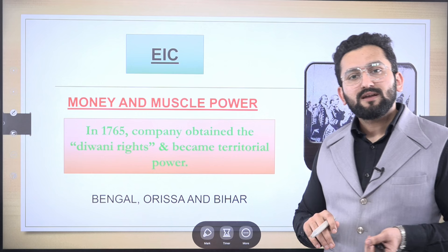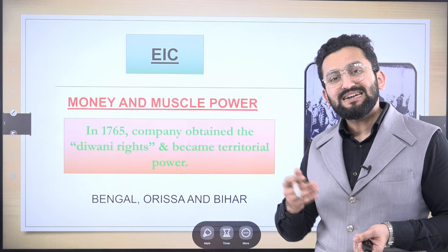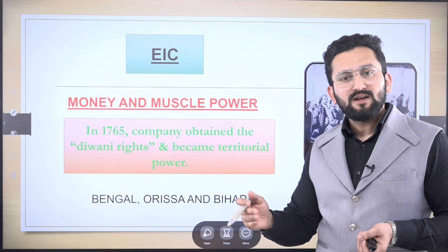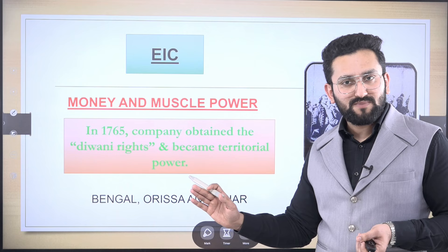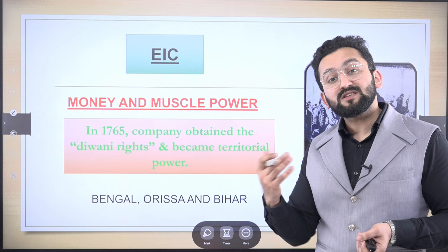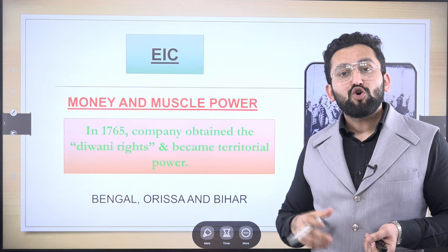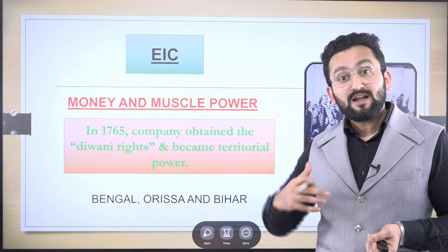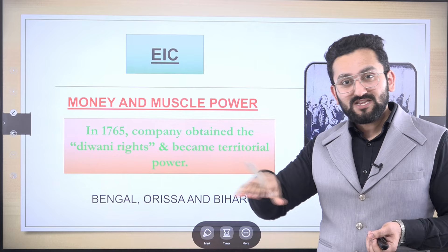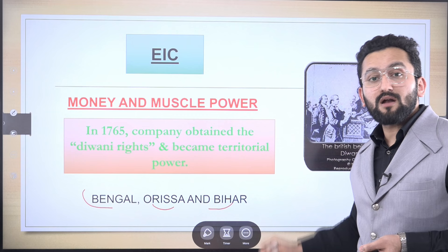The English East India Company came as a trader but extended as a territorial power. The Battle of Plassey and later the crucial Battle of Buxar changed the game in favour of the company. The Treaty of Allahabad followed, and after this, the private company got Diwani rights. Diwani rights means the company now had the power to collect revenues from subjects in that area — Bengal, Orissa, and Bihar — big provinces.